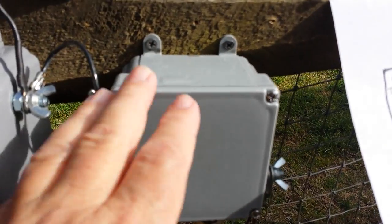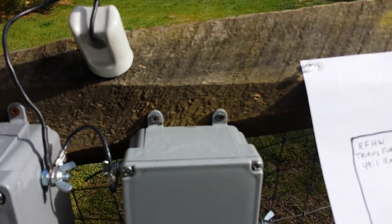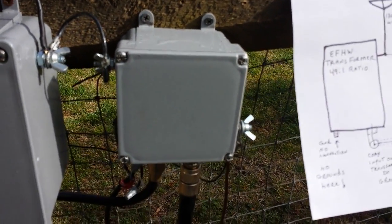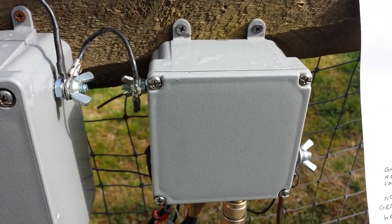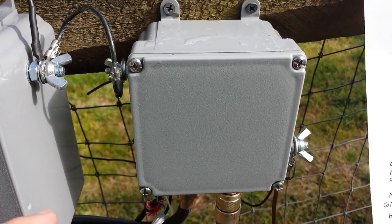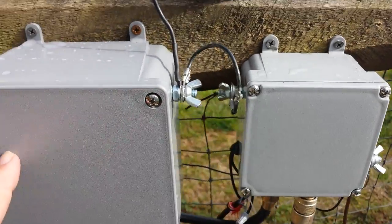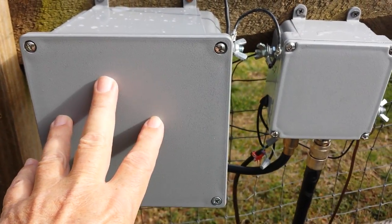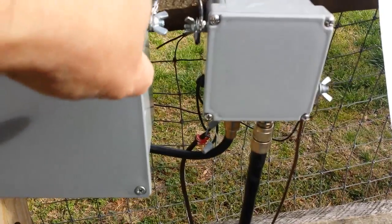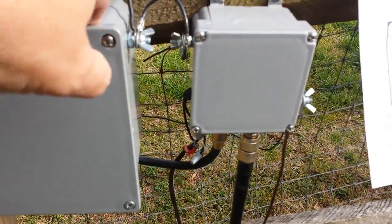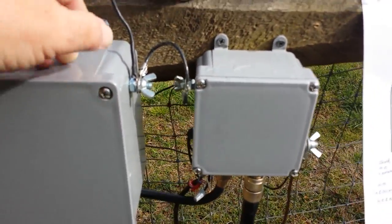This box has a relay and that's all that's in it. It's a double pole double throw 12 volt coil relay and what that does is bypass. It bypasses this and runs the signal from my shack, pardon the airplane, directly to the antenna.